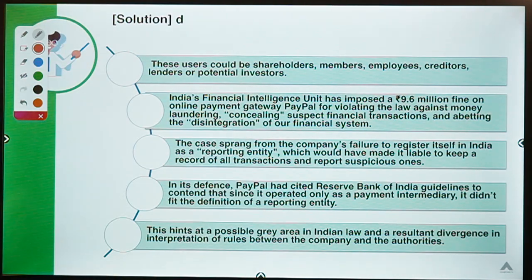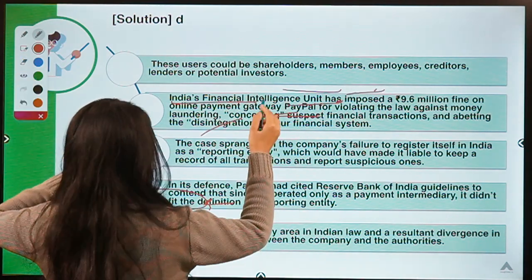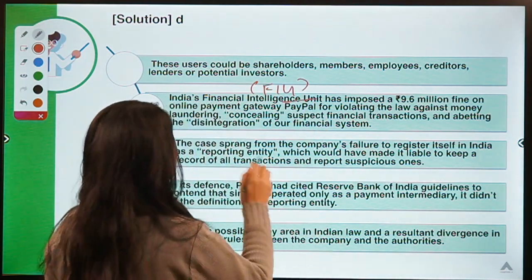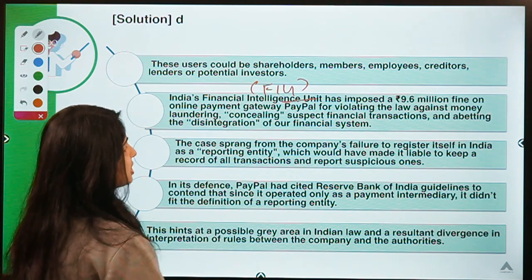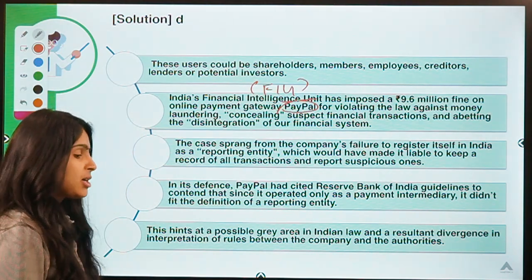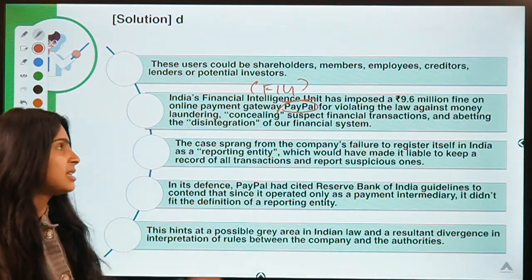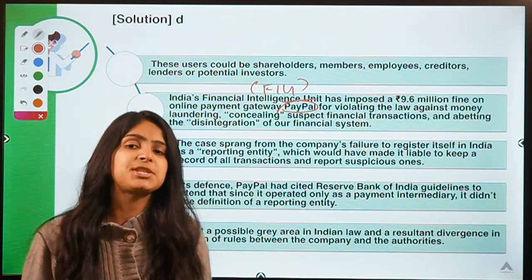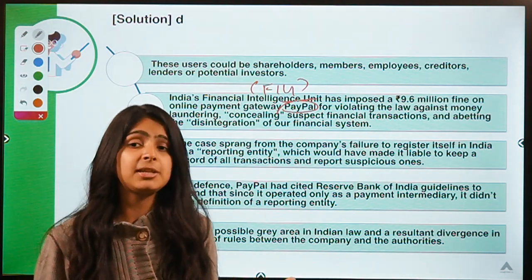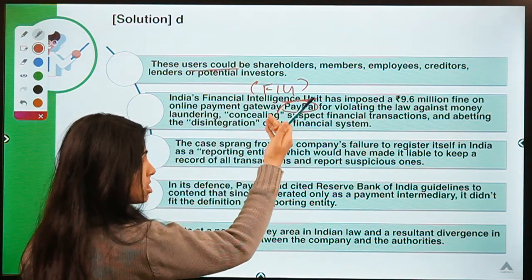This topic is relevant because recently India's Financial Intelligence Unit, popularly known as FIU, imposed a fine on PayPal. FIU is saying that PayPal has not revealed its financial data, which is very important for it to do. PayPal, however, argued that it does not qualify as a reporting entity, which is why it did not register in India as one and did not comply. Users of these financial reports can be anyone — shareholders, members, or employees.